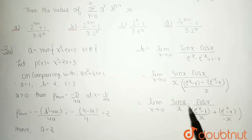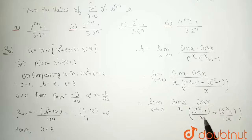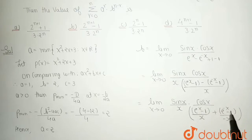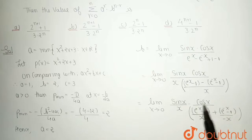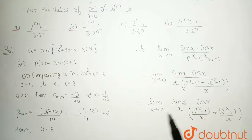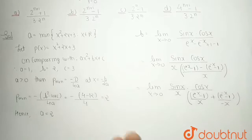We apply two standard limit formulas: lim(x→0) sin x / x = 1 and lim(x→0) (e^x − 1) / x = 1. Replacing x by −x gives the same formula. So each term equals 1, and cos 0 = 1. Therefore the limit evaluates to 1 · 1 / (1 + 1) = 1/2. So the value of b is 1/2.